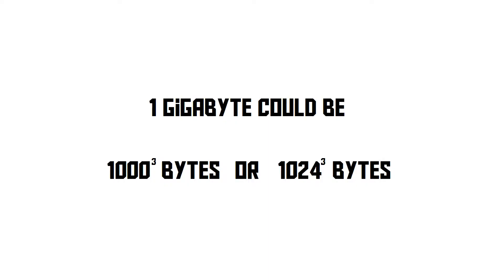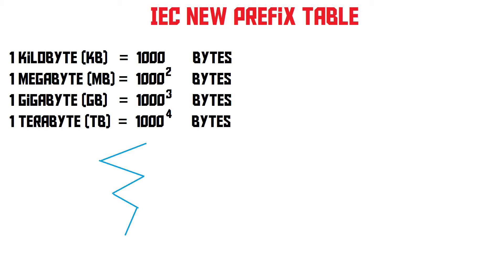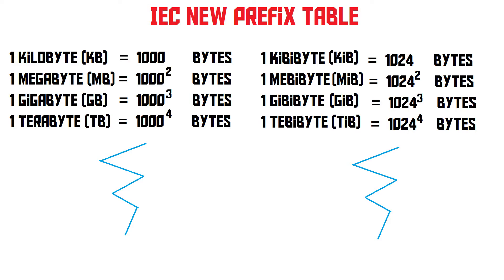In 1998, the IEC came up with a new system meant to fix all these problems. First, the standard prefixes — kilo, mega, giga, tera, and so on — would all have their official meaning. So the kilobyte would be 1,000 bytes. But they also acknowledged that 1,000 is not a nice number for computers. So they came up with a new set of prefixes for the 1,024 system: 1,024 bytes would be called the kibibyte, and 1,024 kibibytes would be the mebibyte, and so on. So if you say 1 gibibyte, you mean 1,024 to the power of 3 bytes, and if you say gigabyte, you mean 1,000 to the power of 3 bytes.